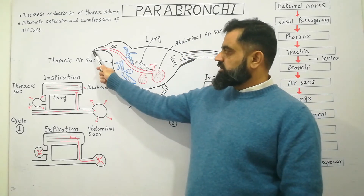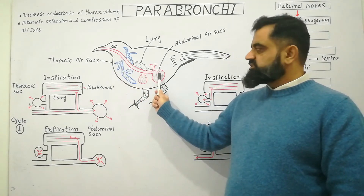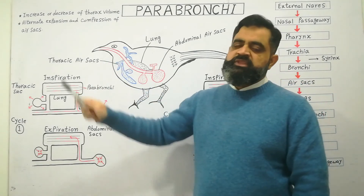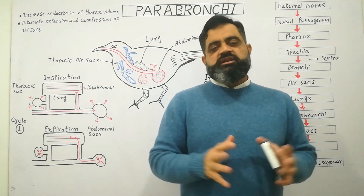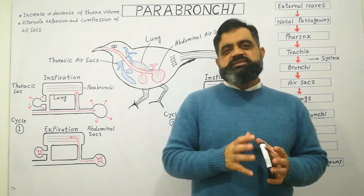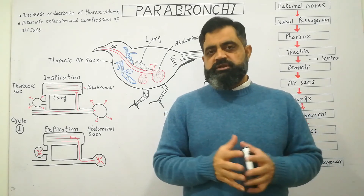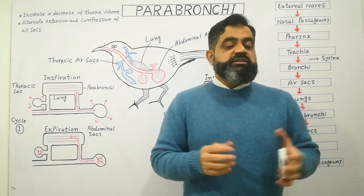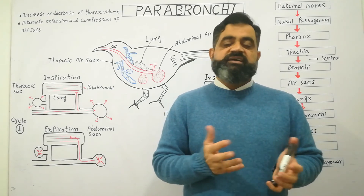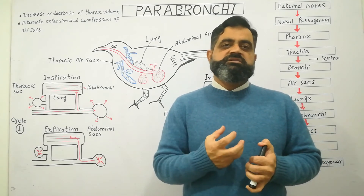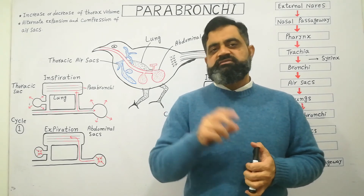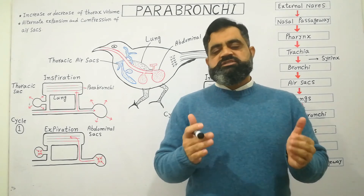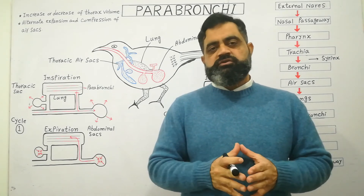In this way, air constantly enters from the nasal passageway, moves into the respiratory tract, and leaves outside the body. Air comes into the abdominal air sacs, from there into the lungs and parabronchi, then into the thoracic air sacs, and then outside the body — constantly ventilating with no stale air present in the lungs. This is the best respiratory system found in the animal kingdom, because birds have a high metabolic rate and fly thousands of kilometers without tiring, as their lungs are constantly ventilated with fresh air.